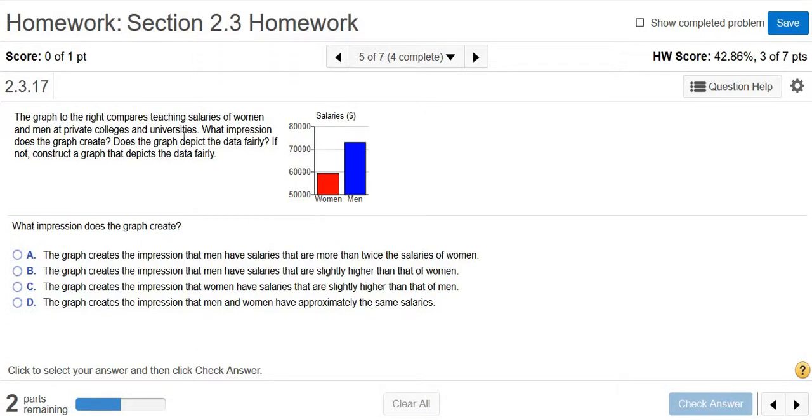The graph to the right compares teaching salaries of women and men at private colleges and universities. What impression does the graph create? Does the graph depict the data fairly? If not, construct a graph that depicts the data fairly.